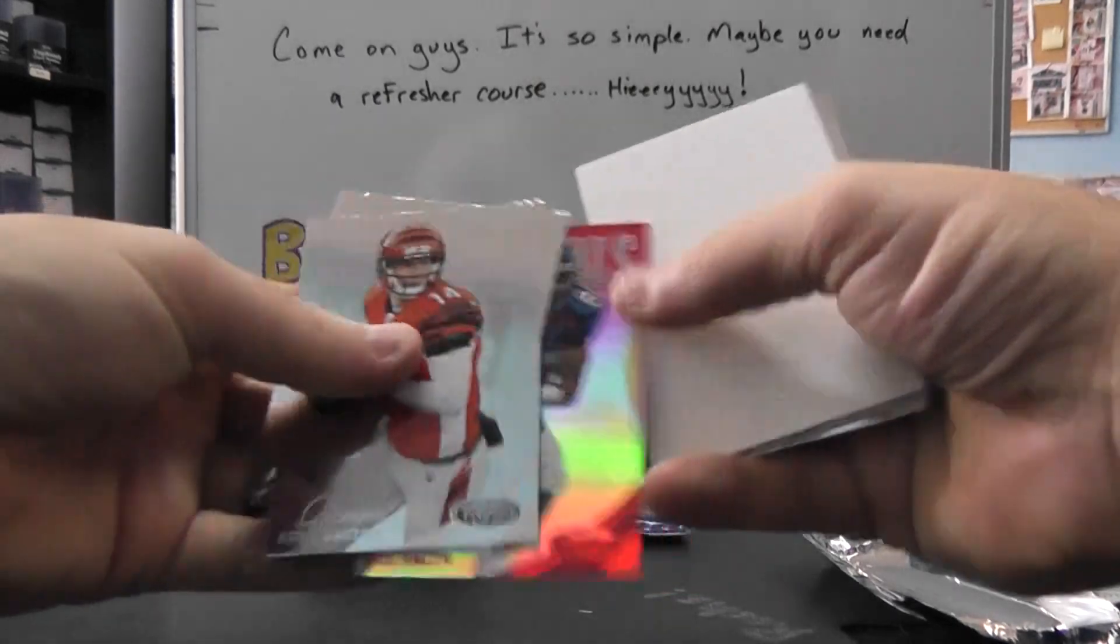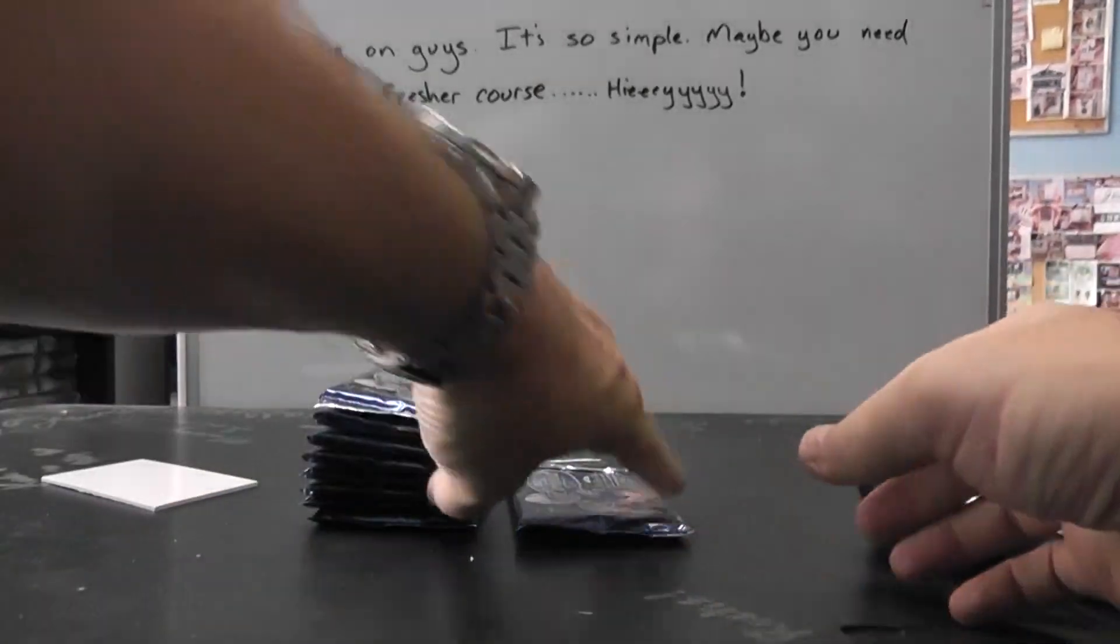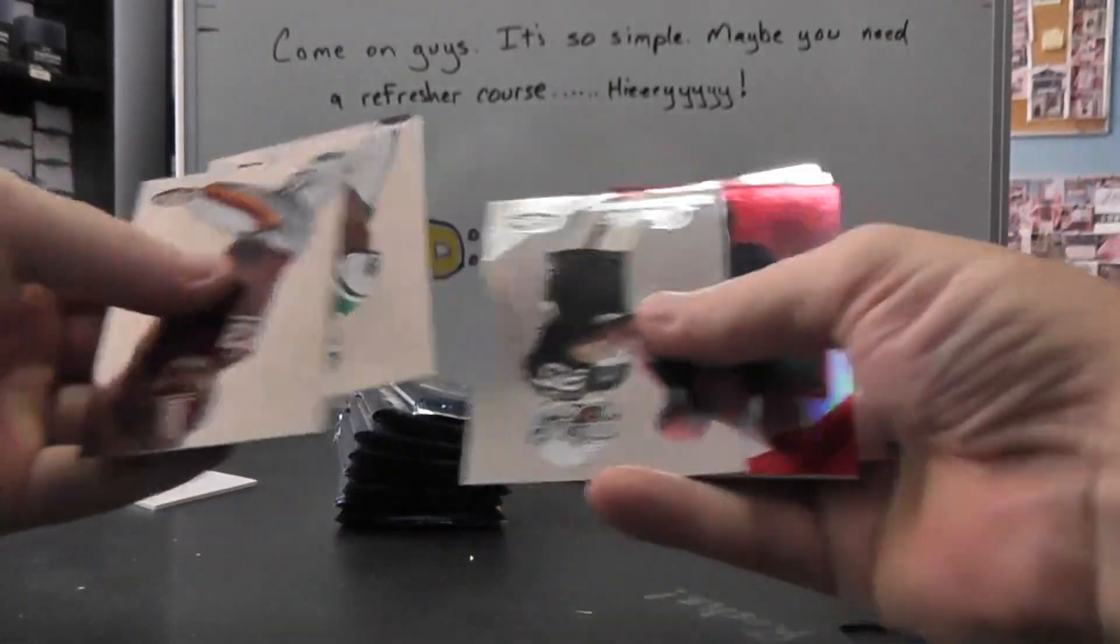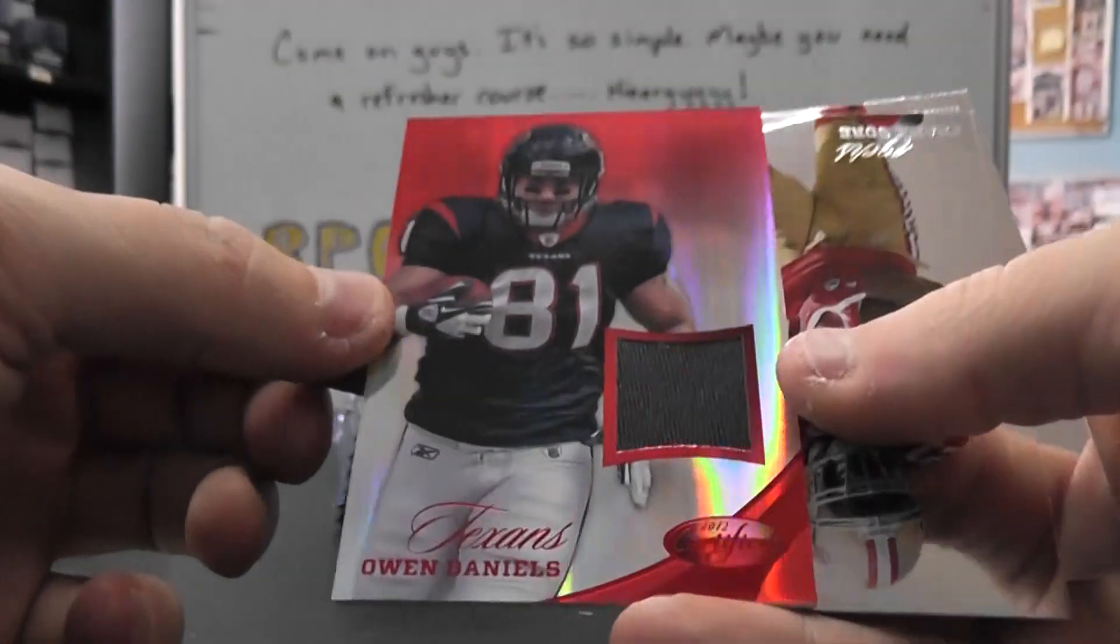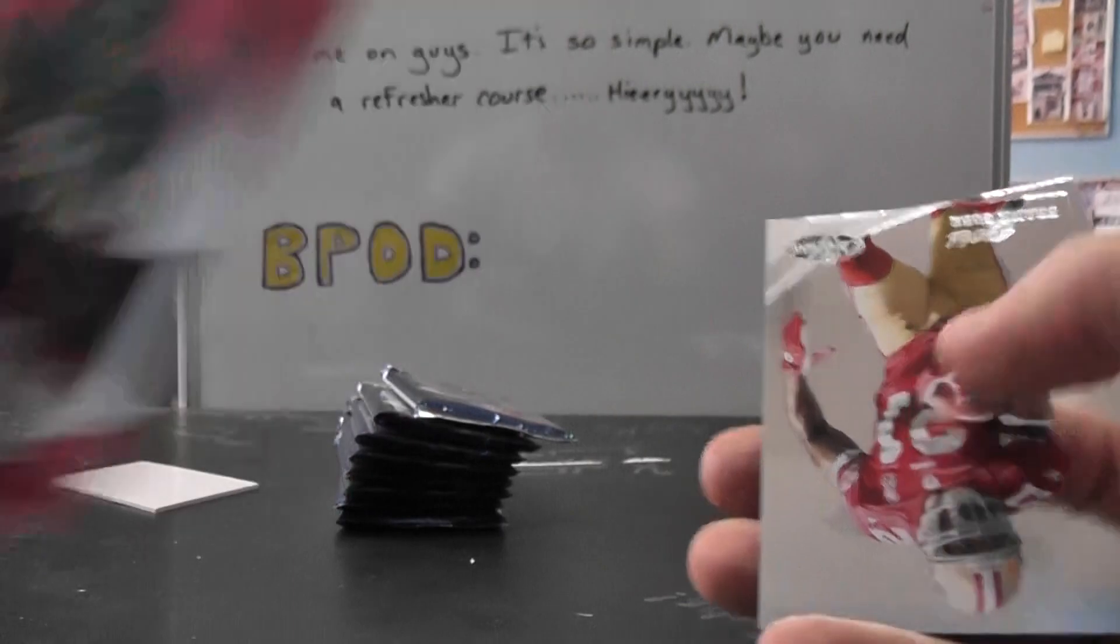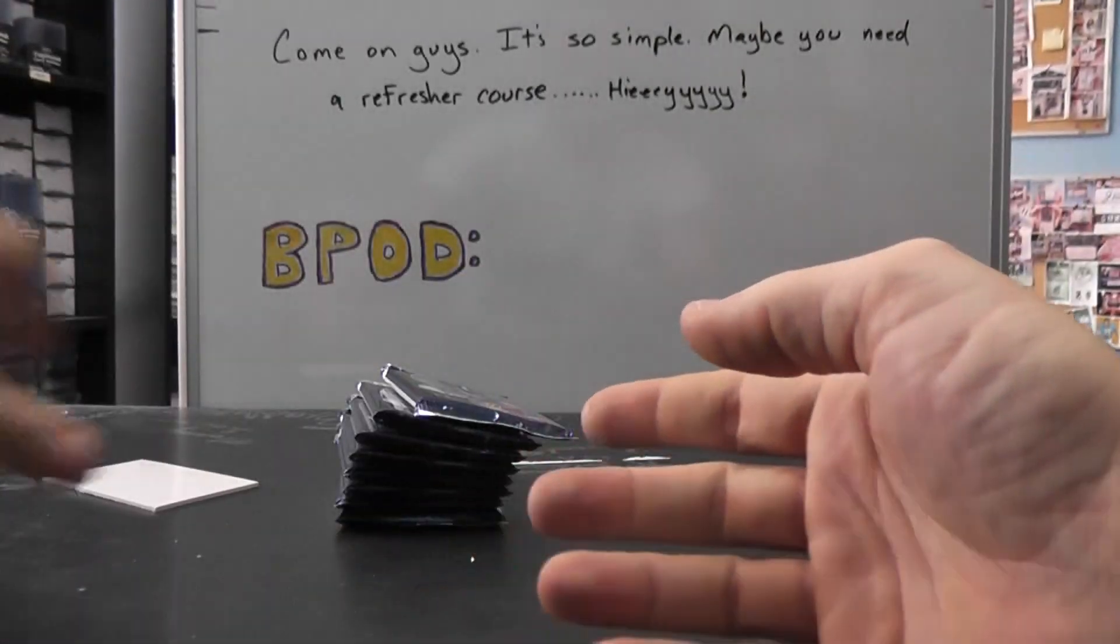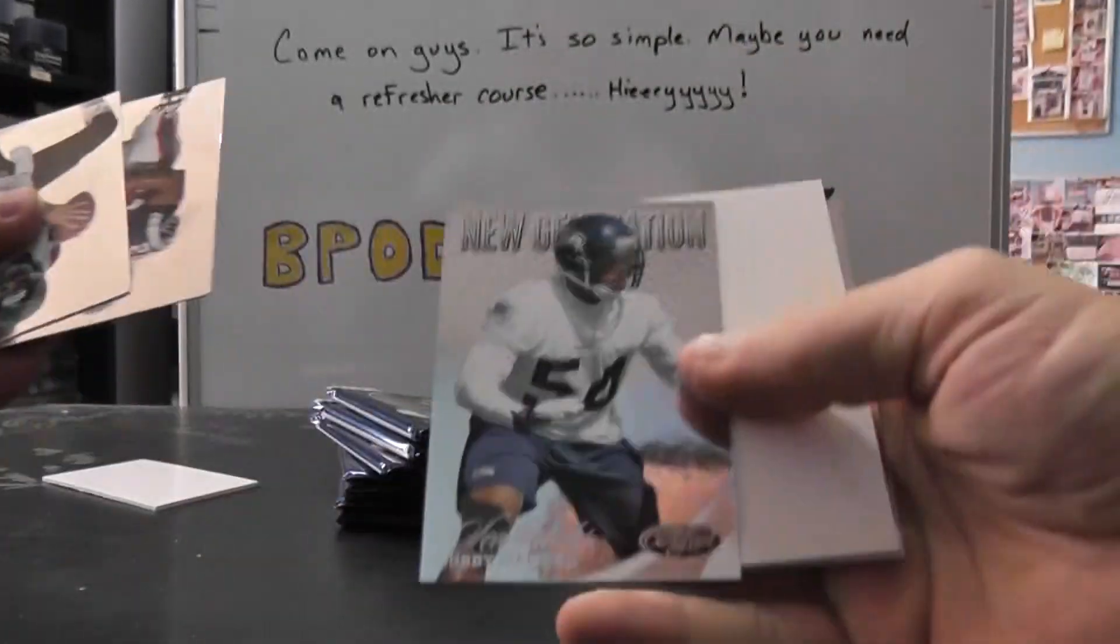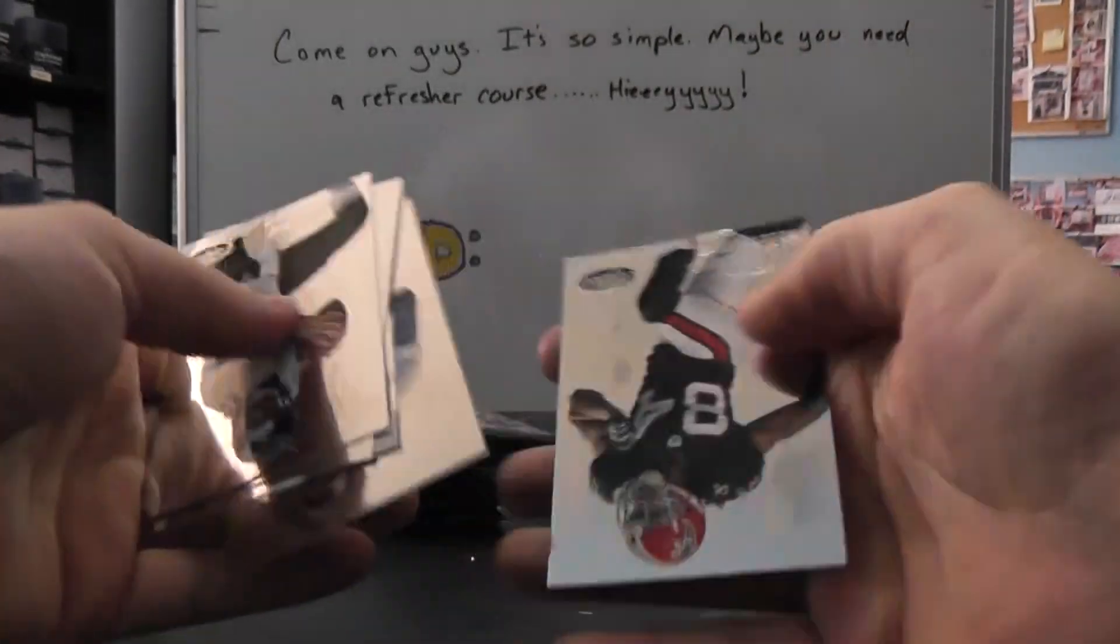We have Immortals Rod Smith, $2.50. Just a jersey, Owen Daniels, and that one's numbered at $49. Bobby Wagner, $9.99.